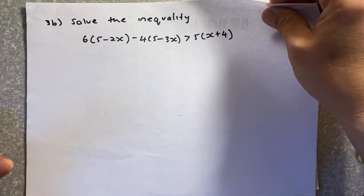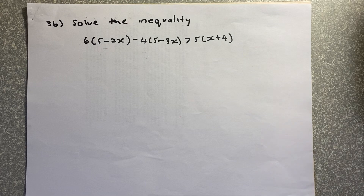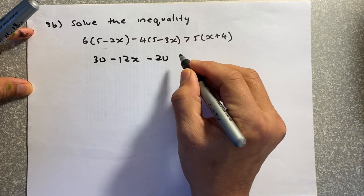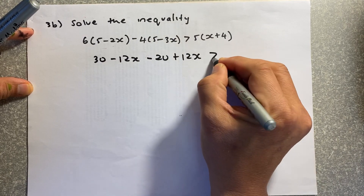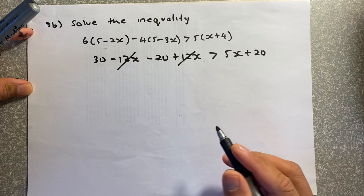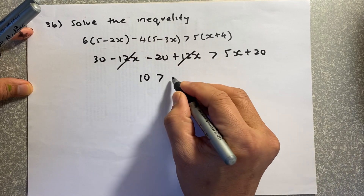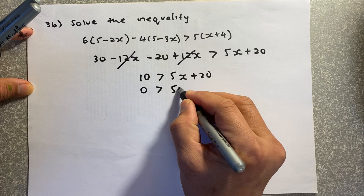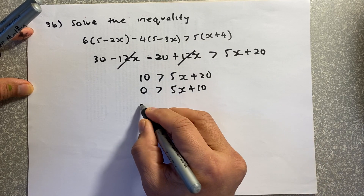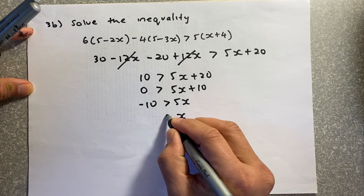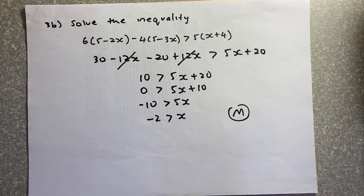Solve this inequality. Treat it like an equation: expand to get 30 − 12x − 20 + 12x greater than 5x + 20. The −12x and +12x cancel, leaving 10 greater than 5x + 20. Subtract 10 from both sides: 0 greater than 5x + 10, so −10 greater than 5x. Divide by 5: x is less than −2. That gives a merit.